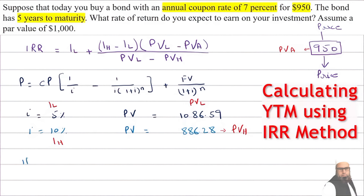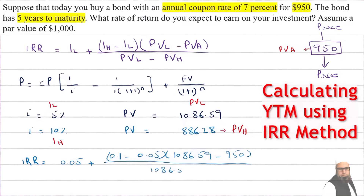Now we put these values into the IRR formula: IRR = 0.05 + (0.10 − 0.05) × (1,086.59 − 950) / (1,086.59 − 886.28). The IRR works out to approximately 8.41%. Note that if we increase or decrease the gap between IL and IH, it will affect our yield to maturity result — a larger gap causes the answer to diverge from the actual YTM. Using this formula, our yield to maturity is approximately 8.41%.